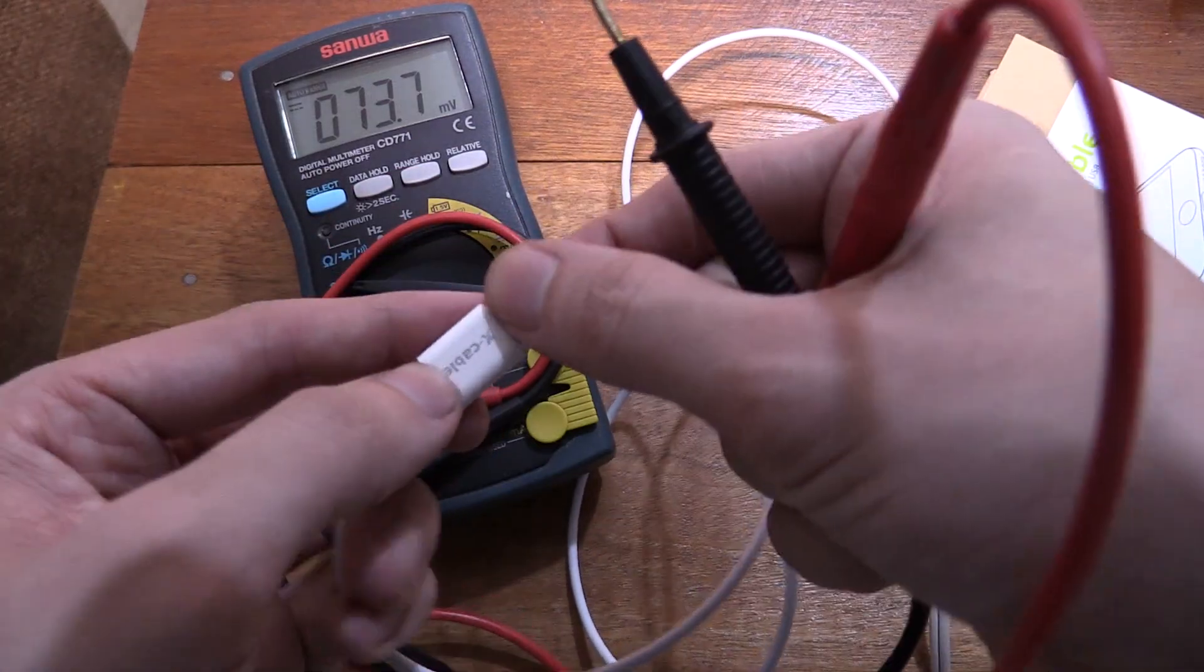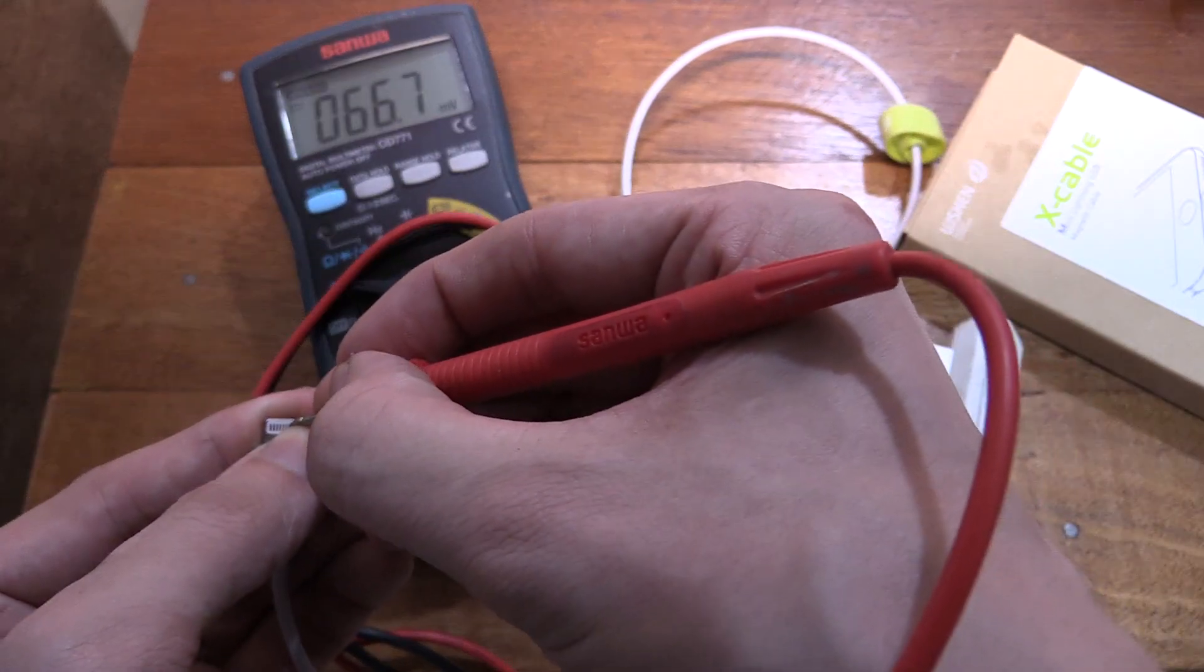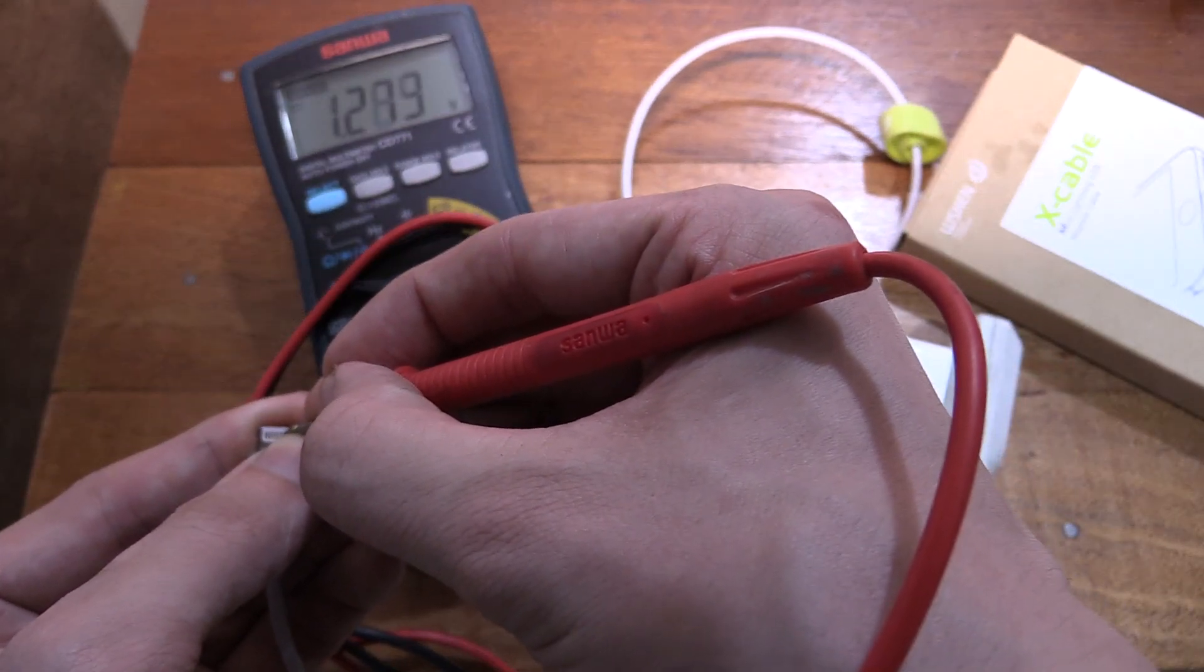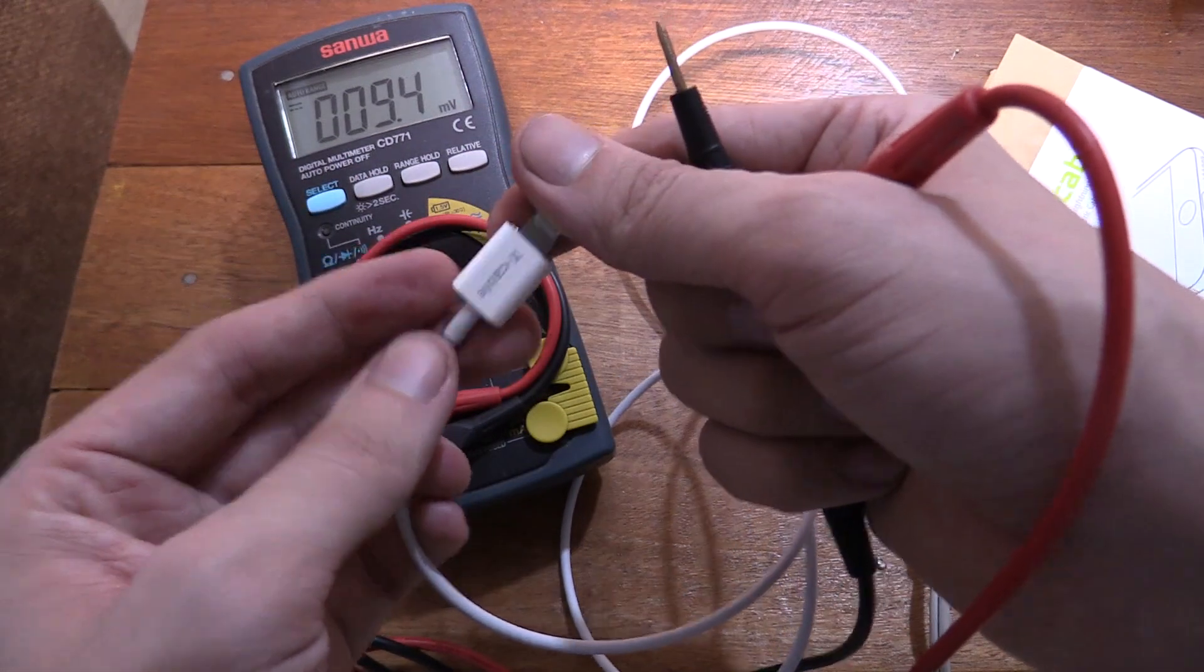So I've now got the magnetic cable plugged in. Let's do the same test. Connect my ground and then let's go for the positive. 1.3 volts. There's the problem. It's not even outputting 5 volts.